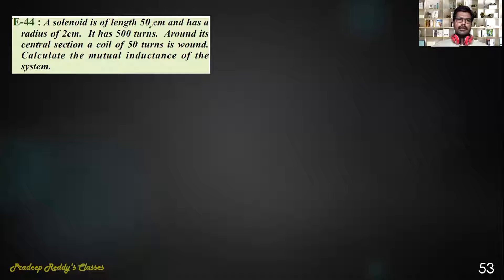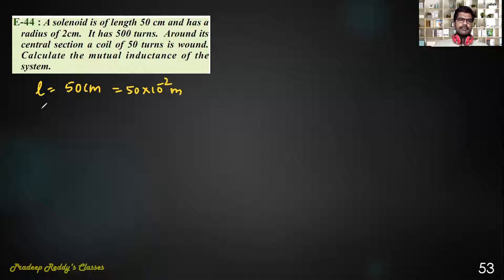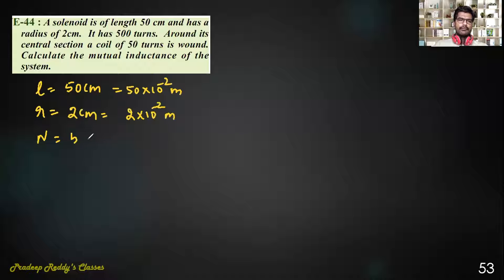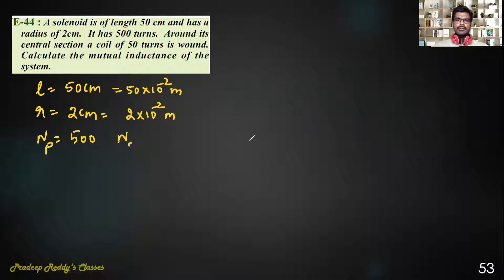A solenoid has a length of 50 centimeter, that is 50×10⁻² meter, and a radius of 2 centimeter, that is 2×10⁻² meter. It has 500 number of turns around its central section. A coil of 50 turns is wound. So the number of turns in the primary coil is 500, and the number of turns in the secondary coil is 50.